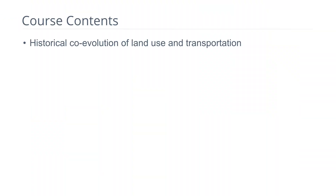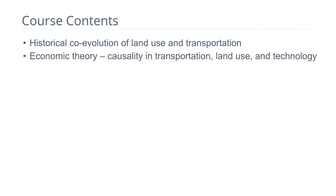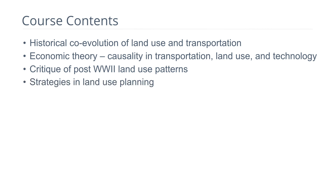The course contents are as follows. We'll discuss the historical co-evolution of land use and transportation systems. We'll explore some economic theory. We'll critique the post-World War II land use patterns that have emerged. And then explore some strategies in land use planning and strategies in transportation planning that can address the interaction of land use and transportation.